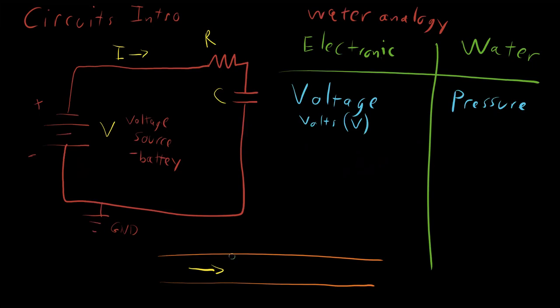Now, there's a similar analogy to the idea of current. Current is measured in units of amps or amperes. We'll just shorten that to amps. And its symbol is I.